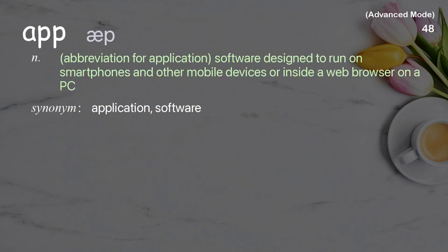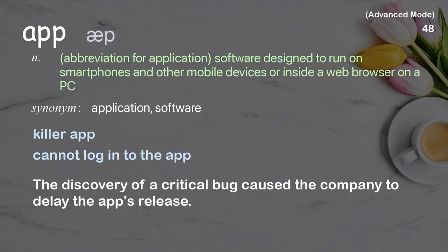App: abbreviation for application; software designed to run on smartphones and other mobile devices or inside a web browser on a PC. Examples: killer app; cannot log into the app. The discovery of a critical bug caused the company to delay the app's release.